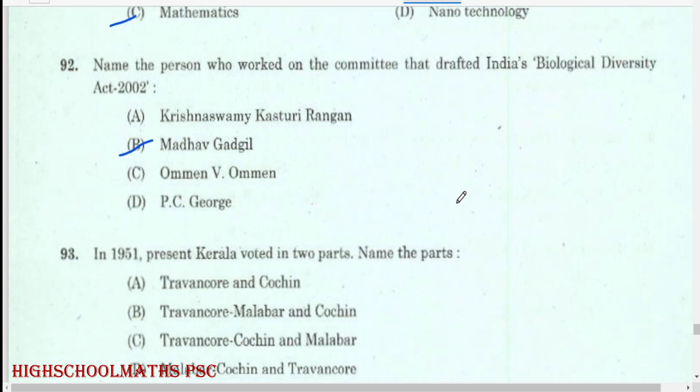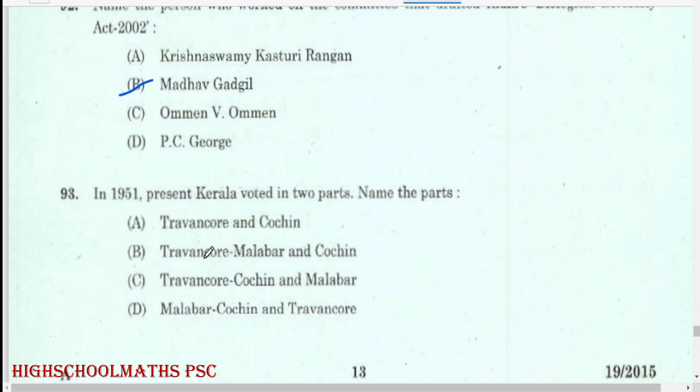In 1951, pre-Kerala was divided into two parts: Travancore-Cochin and Malabar.